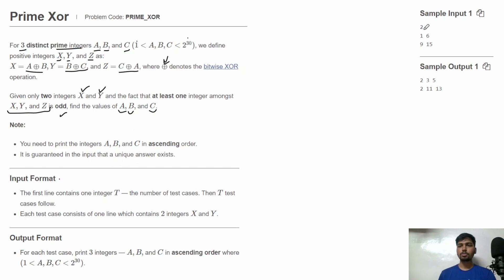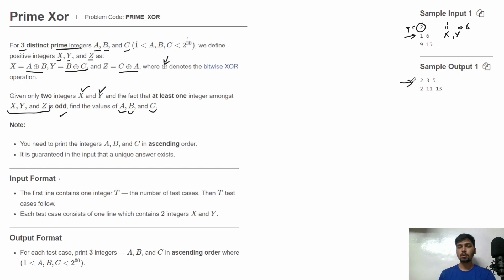Now let's see the input format. In the input, first we'll have the total number of test cases. Then for each test case, we'll have just one line with two integers: the value of x and y respectively. So in the first test case, x is 1 and y equals 6. For each test case, we print one line with the values of a, b and c in ascending order — so 2, 3 and 5, then 2, 11 and 13.